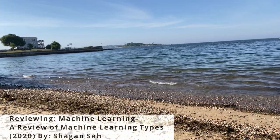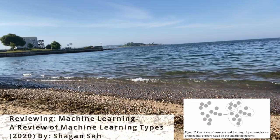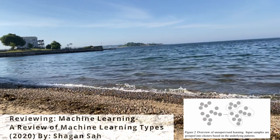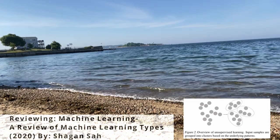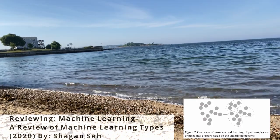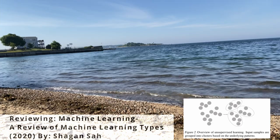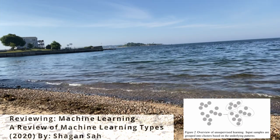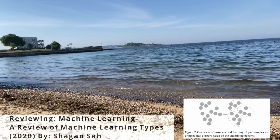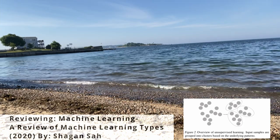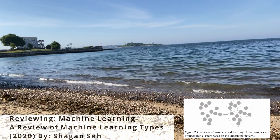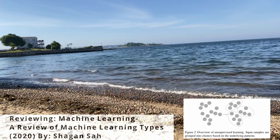But then you jump over to unsupervised learning. That's where you are giving unknown values — basically a dataset that you don't know what's in it — to the machine to learn from it and give you insight into what is in that dataset.